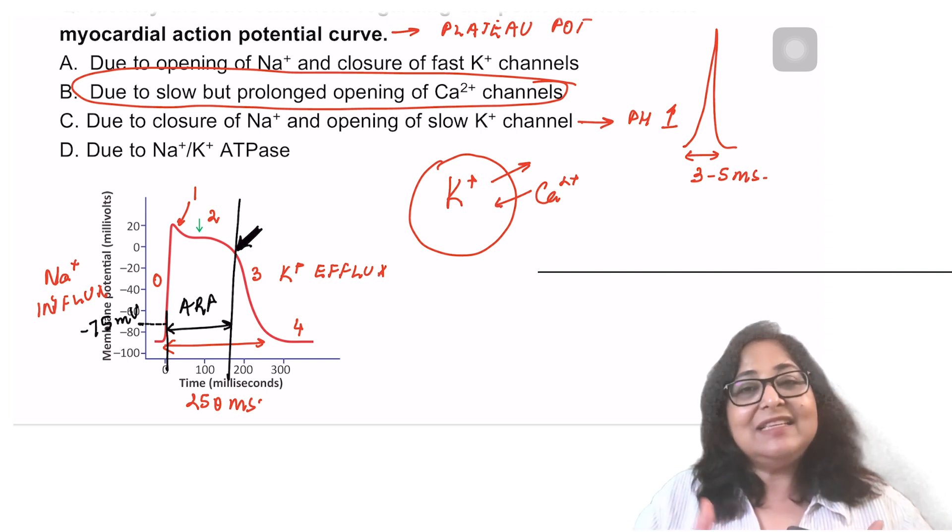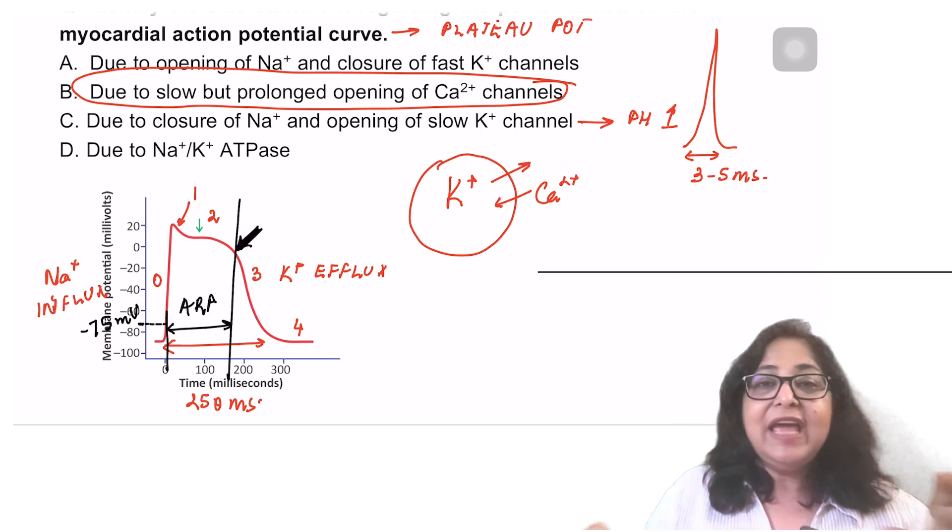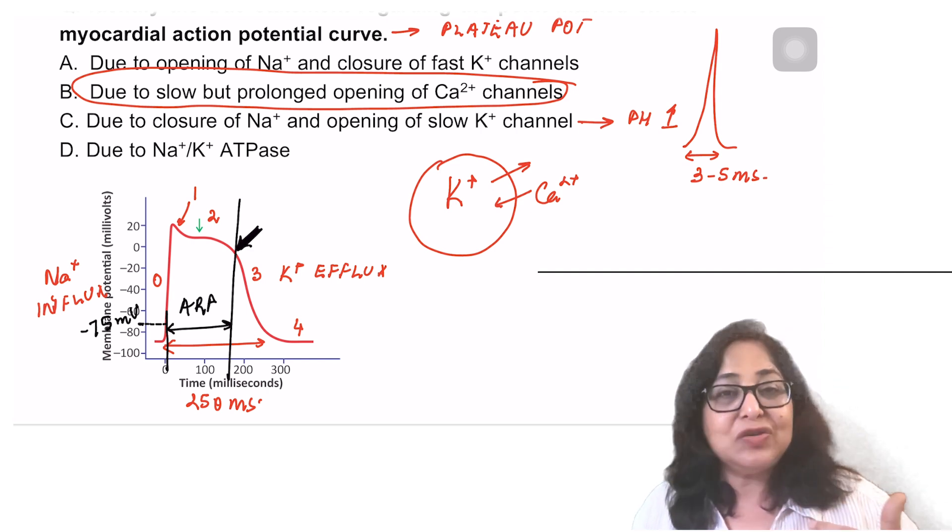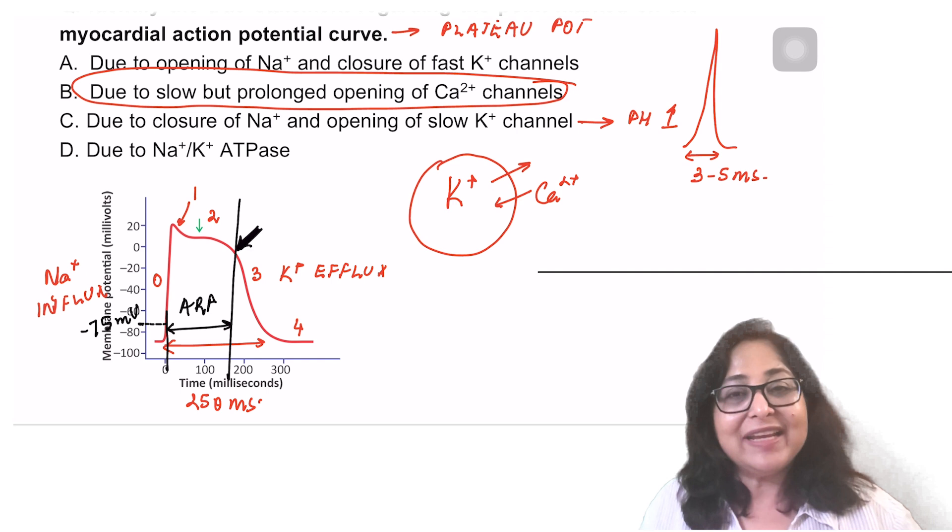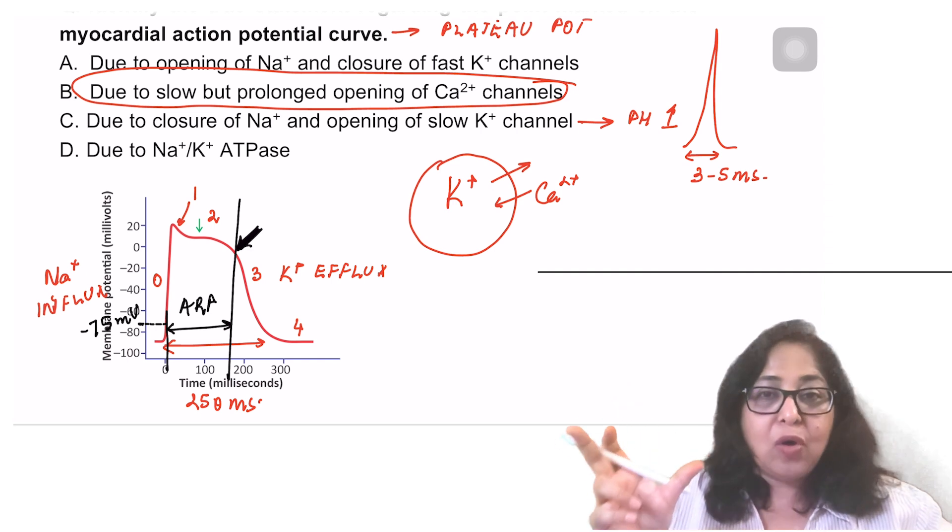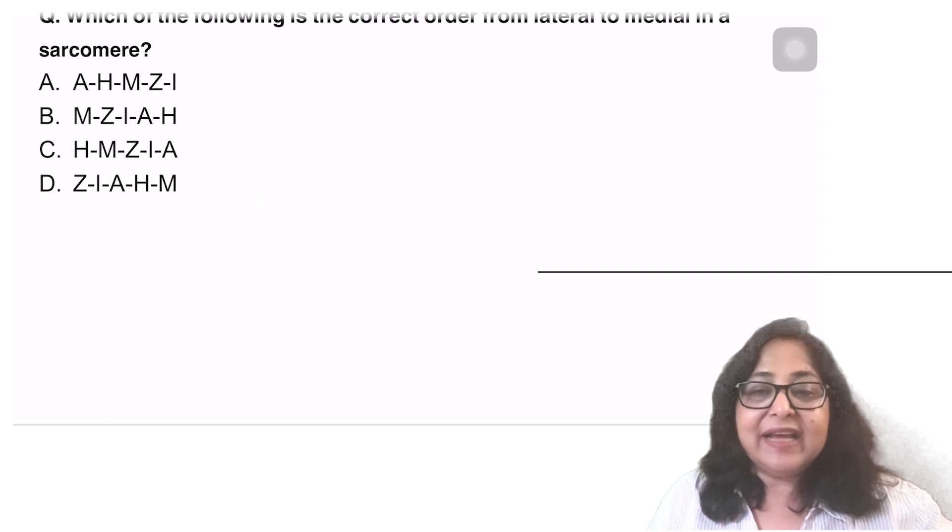Because of this prolonged or widened absolute refractory period, the heart muscle cannot be tetanized. What is tetanus? Tetanus is a state of sustained contraction. In the heart muscle, we want contraction, relaxation, systole, diastole. If the heart goes into a sustained contraction or a sustained systole, that is the end of story. So this tetanization in the heart is prevented by the prolonged absolute refractory period.